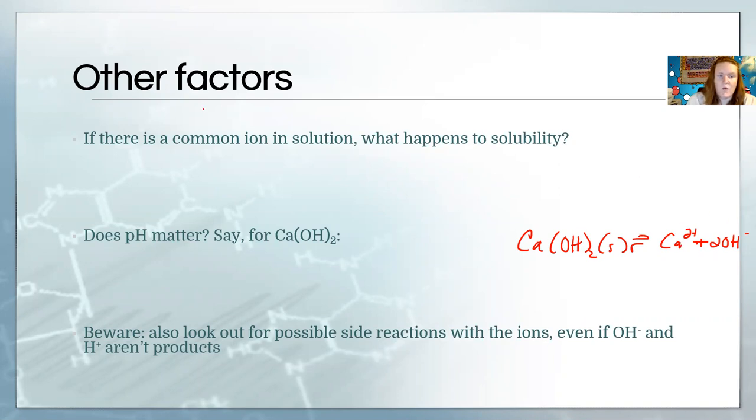When we go back to thinking about the common ion effect from the beginning of chapter 17, it becomes obvious that the pH of your solvent is going to influence how much solid you dissolve. And this is something, in fact, that we have been using in the qual scheme all along. When you manipulate the pH, that is usually to get certain things to dissolve and other things not to.